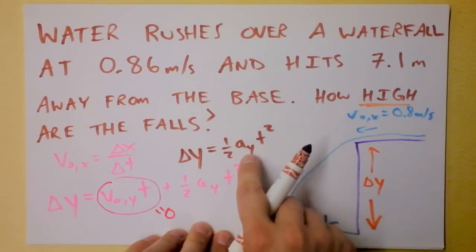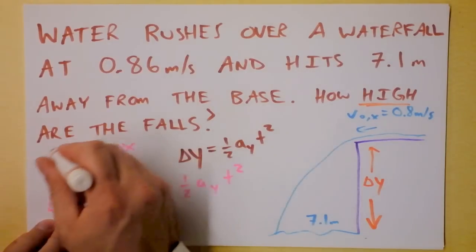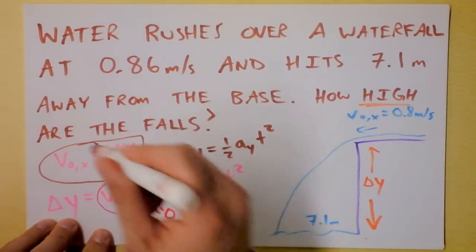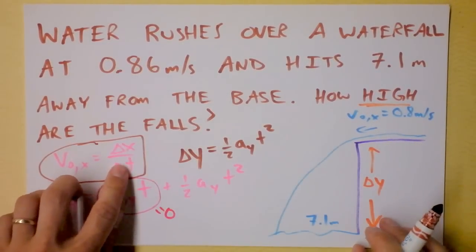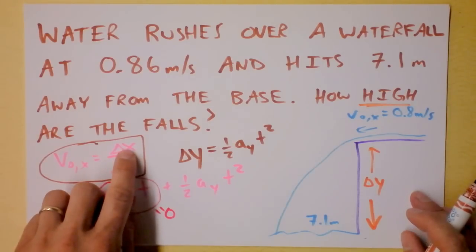The only thing we don't know here because this is negative 9.81 meters per second squared is time. So in fact we can go back to the x direction and say hey x direction, can we get that time? In fact we can because we know the initial velocity in the x direction and we know delta x.